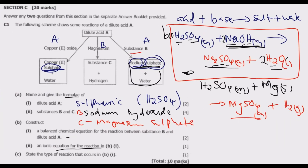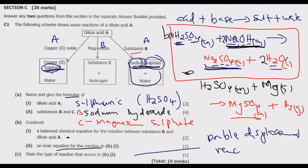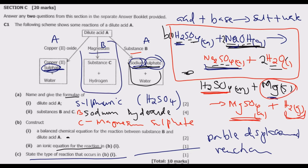Question B(iii) asks us to state the type of reaction occurring in B(i). What is happening is that the hydrogen in sulfuric acid is being replaced by sodium to form sodium sulfate, and the sodium in the hydroxide is being replaced by hydrogen to form water. Replacement is happening in both compounds — this is known as a double displacement reaction. Remember, your success depends on extensive revision — your Grade 12 results are very important. Join me in the next episode as we look at Question C2.